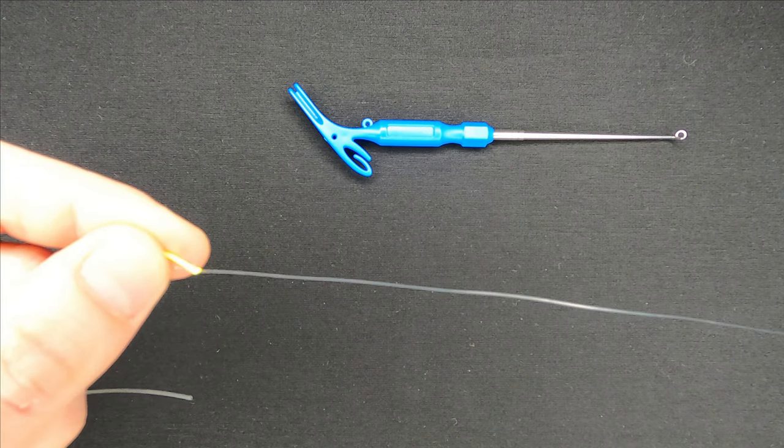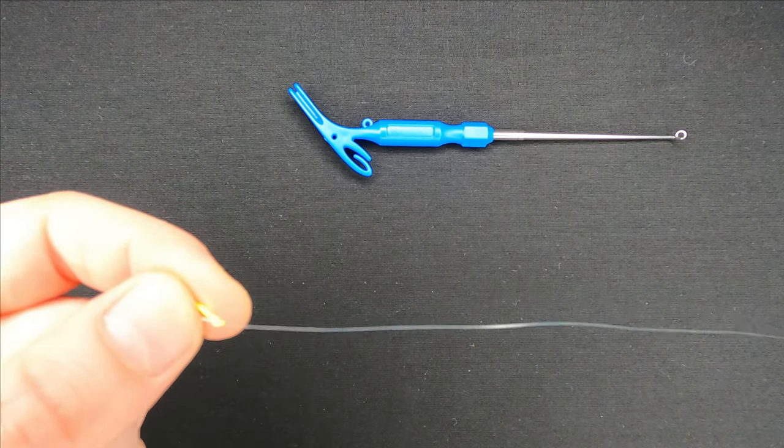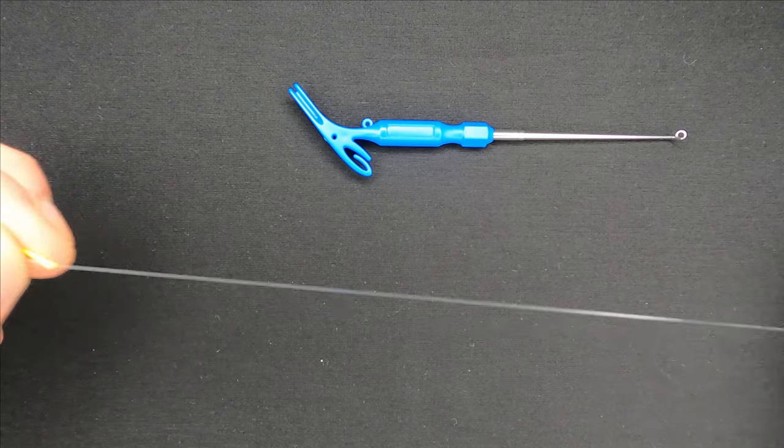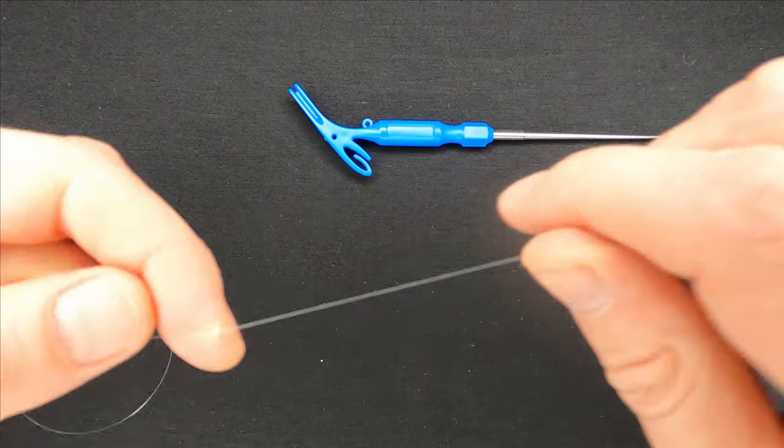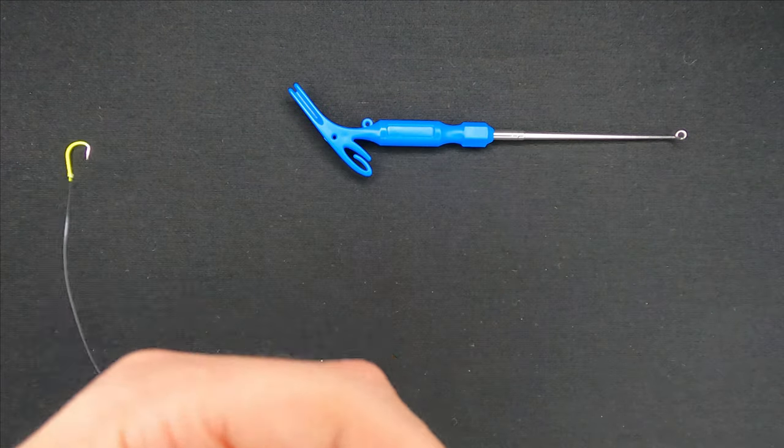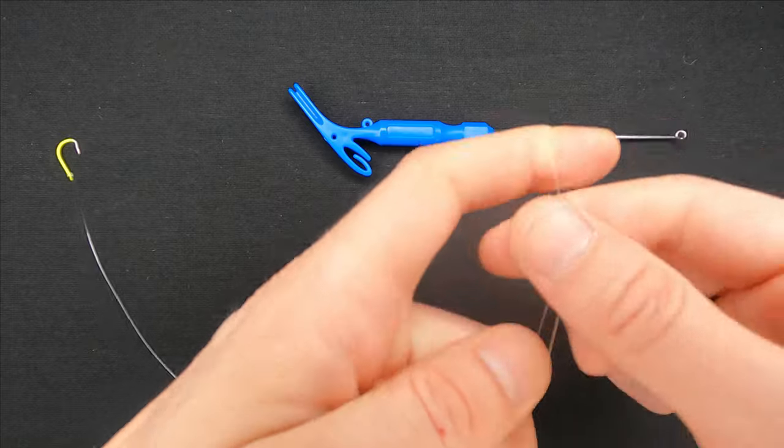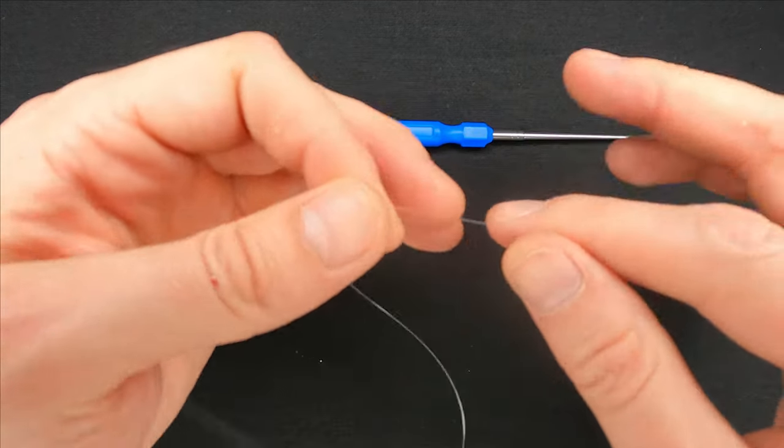I will make the loop on the same line as I've tied the hook to. You make a loop from the line and hold the middle of it with your index finger. Take a bit more line if you are doing it for the first time.